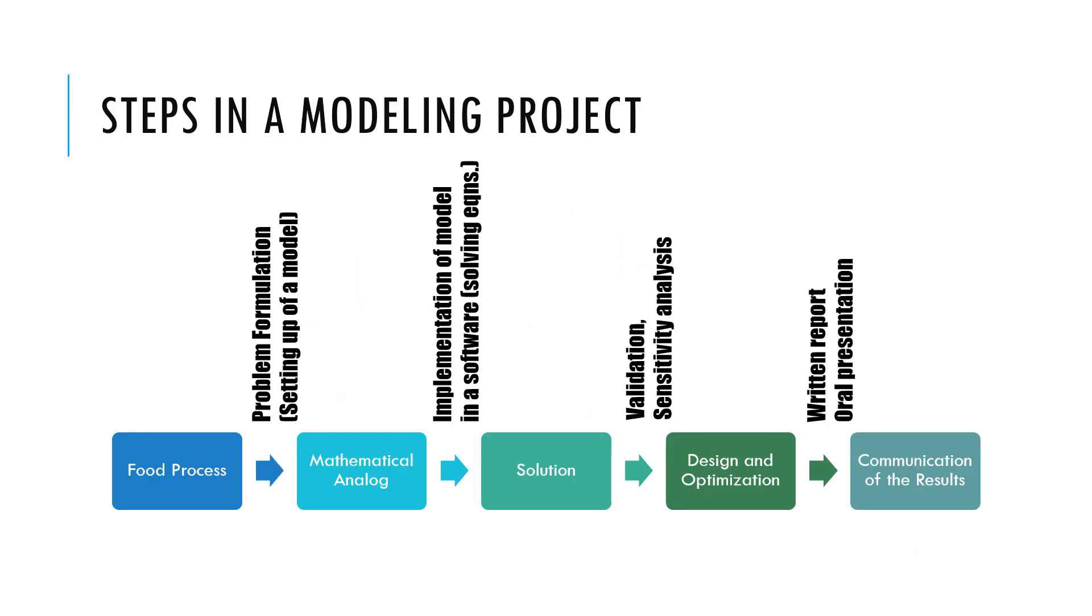Let's break down modeling into its most important steps. We start from a food process and develop its governing equations and boundary conditions that would be called the mathematical analog of the food process. This is called the problem formulation stage.